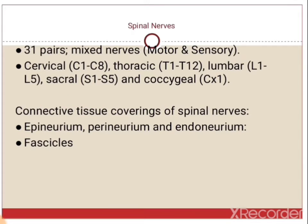There are 31 pairs of spinal nerves, and these are mixed nerves — both motor and sensory. There are 8 cervical, 12 thoracic, 5 lumbar, 5 sacral and 1 coccygeal pair of spinal nerves. These nerves are surrounded by connective tissue layers: the outermost epineurium, then perineurium, and the innermost endoneurium. The nerve fibres are arranged in bundles known as fascicles.